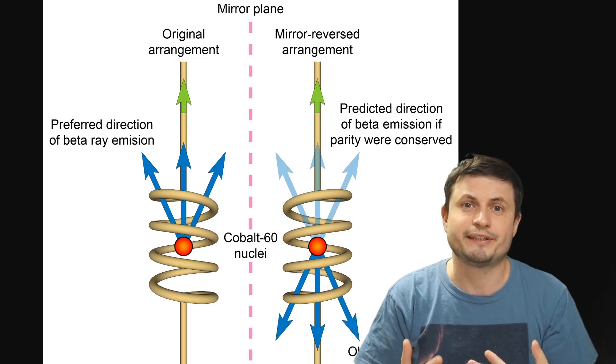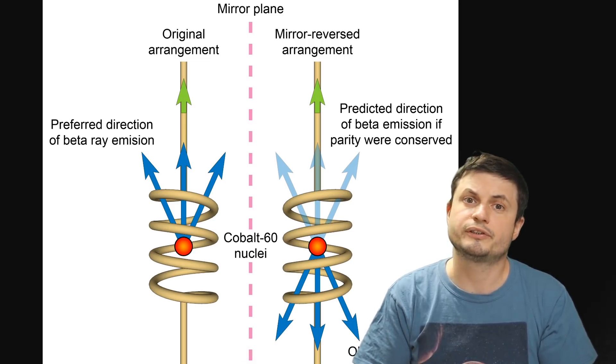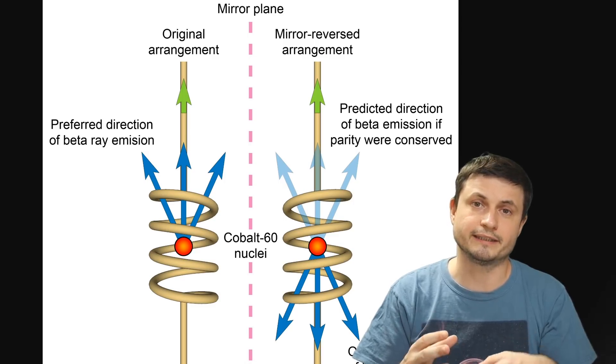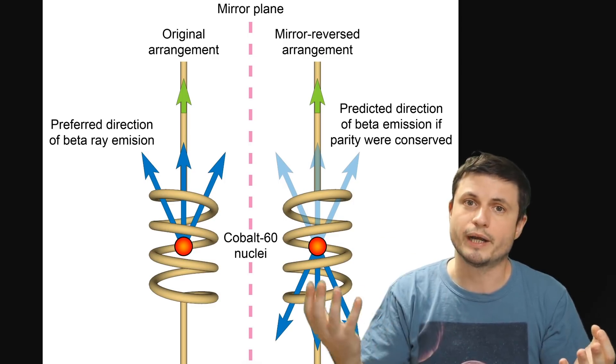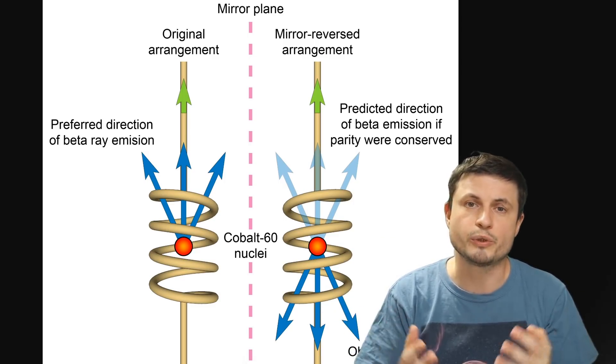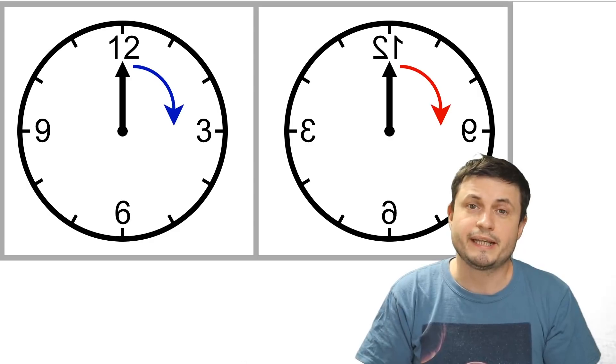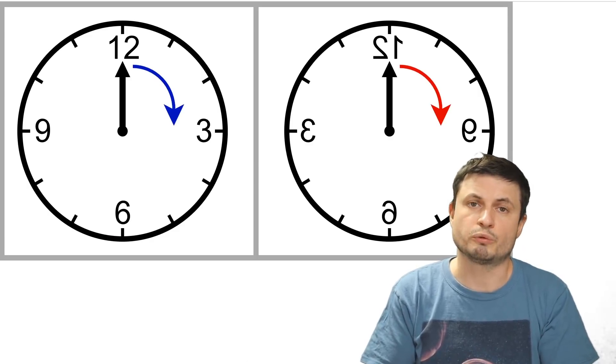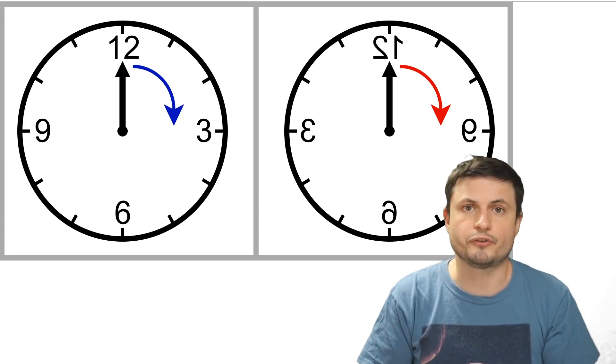But time and time again, the experiment showed that there were significantly more beta rays on the left side compared to the right side. In other words, the weak force was indeed P-asymmetrical, which back then, when it was just discovered, really confused a lot of scientists. And even the famous Nobel Prize winner Wolfgang Pauli back then exclaimed that this was complete nonsense, none of this made sense and it was probably not true.